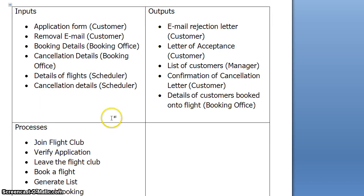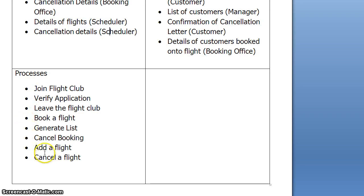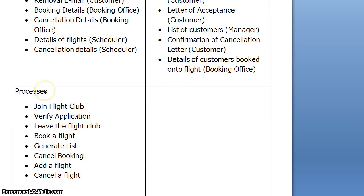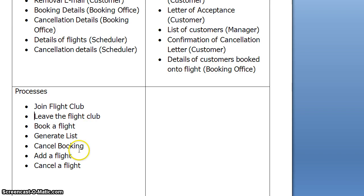That completes our list of inputs, outputs, and processes. To confirm: inputs are application form, removal email, booking details, cancellation details, details of flights, and cancellation details of flights. Outputs are email rejection letter, letter of acceptance, list of customers, and confirmation cancellation letter with details of customers booked onto a flight. The processes, which will be used in a level 1 diagram: join flight club, verify the application, leave the flight club, book a flight, generate list, cancel booking, add a flight, and cancel a flight. It could be that verifying the application is part of the joining the flight club process, so there's nothing to stop us taking that one out, which leaves us with 7 processes.